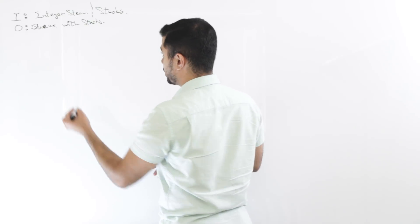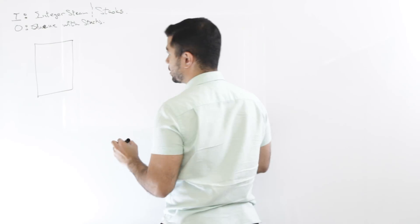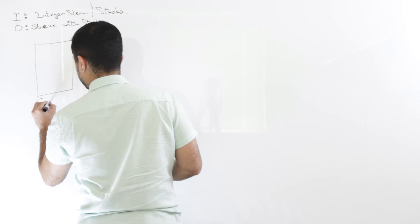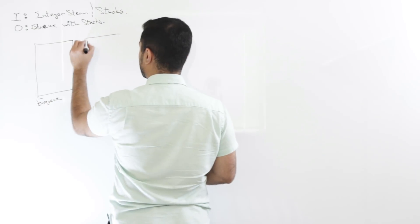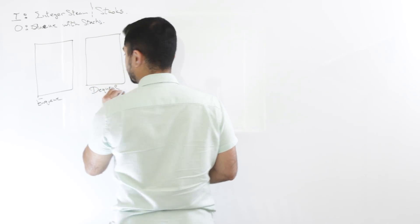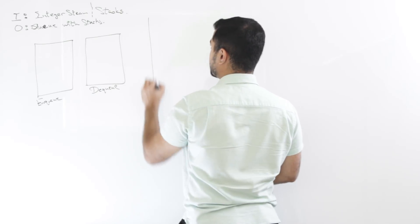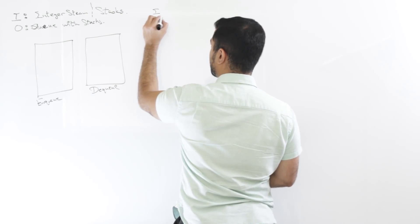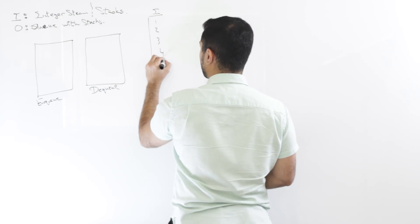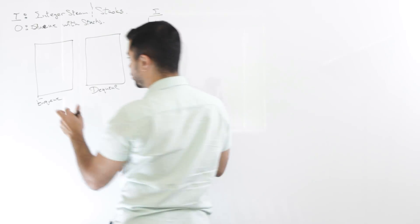So the way I would do this is I'll have one stack as an enqueue stack and another stack as a dequeue stack. So in this case, any time, let's say this is the input stream, I for inputs, and I'm inputting 1, 2, 3, 4, 5, 6, 7, let's say in a row. So no dequeue yet.